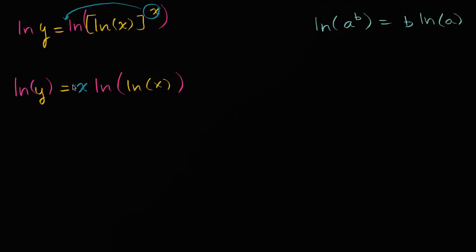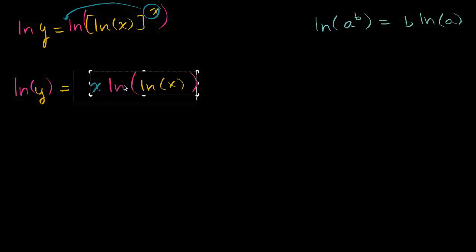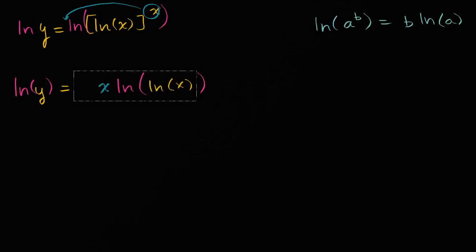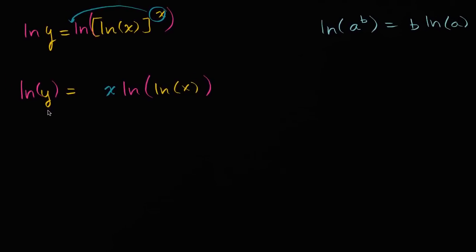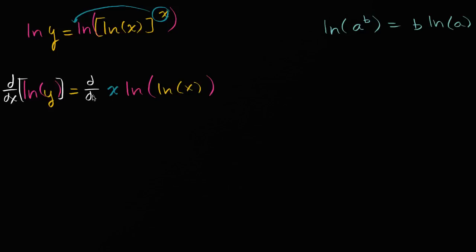Now we can implicitly take the derivative of both sides of this. Let me scoot this over to the right a little bit so I have space for my derivative operator. Now let's take the derivative with respect to x of both sides — the left-hand side and the right-hand side.